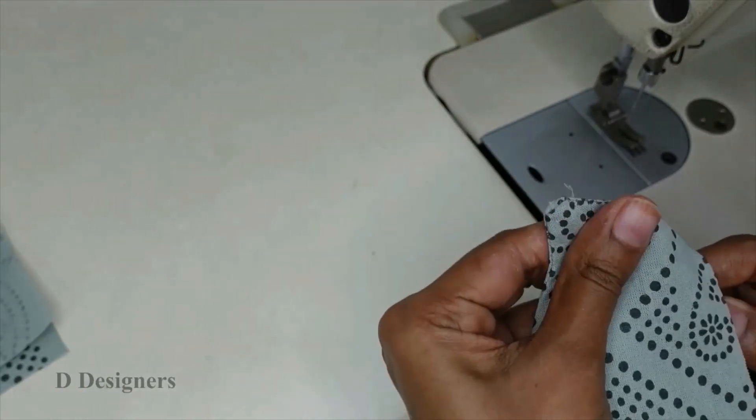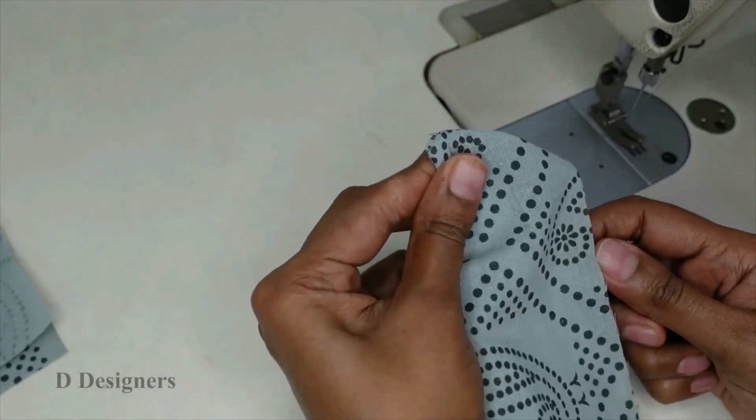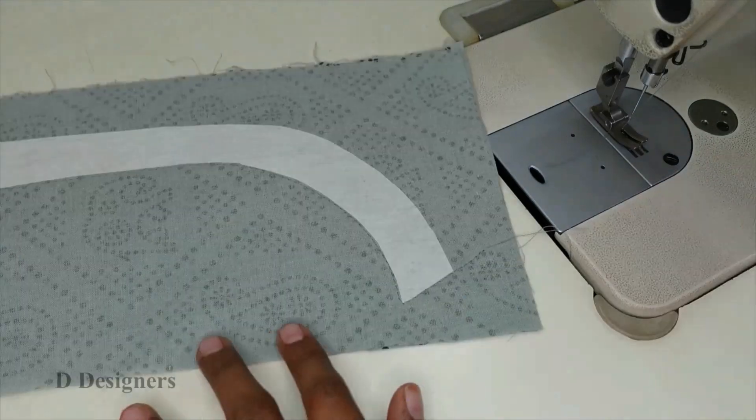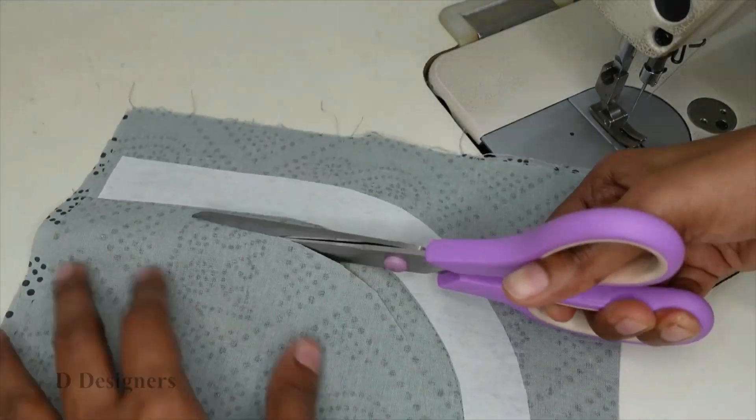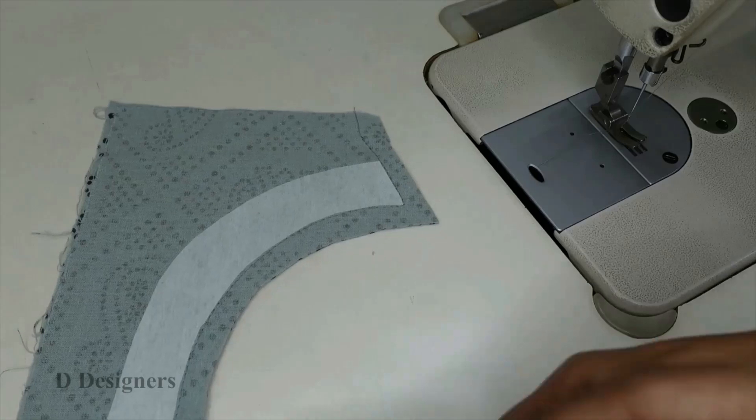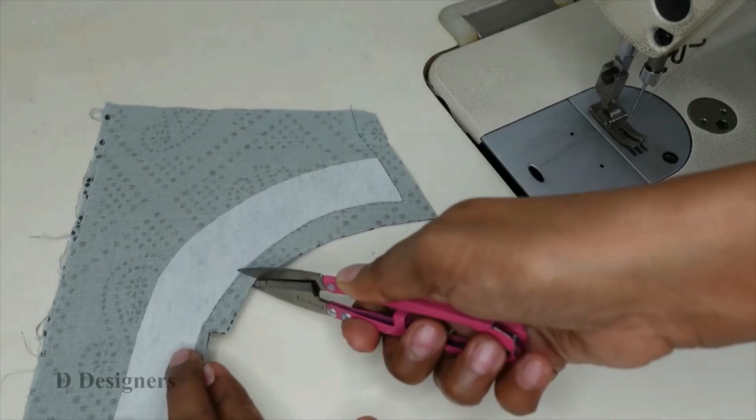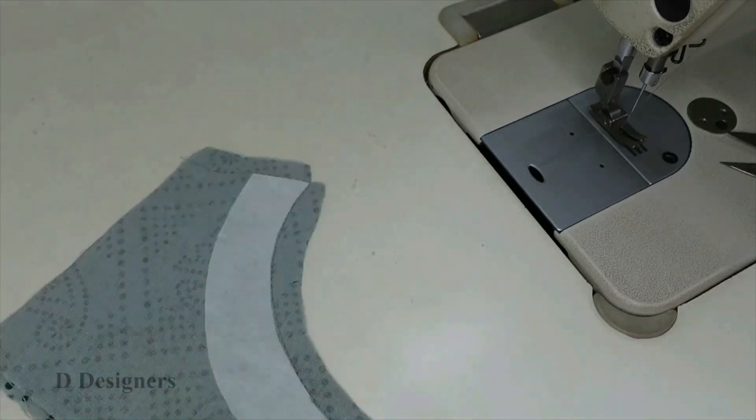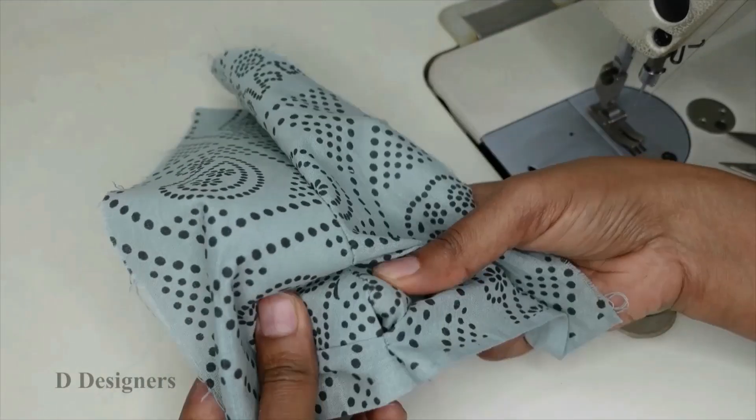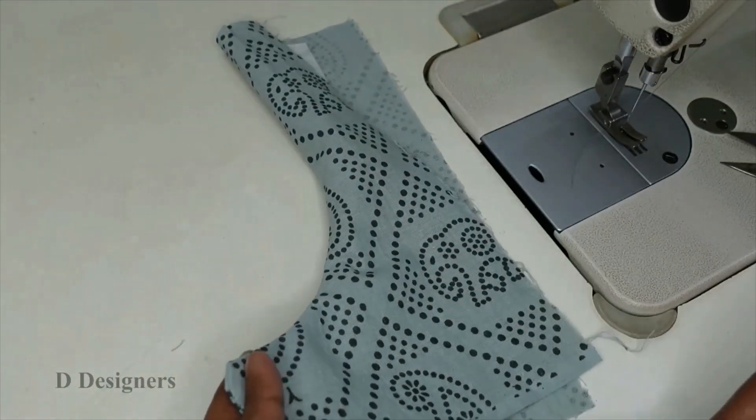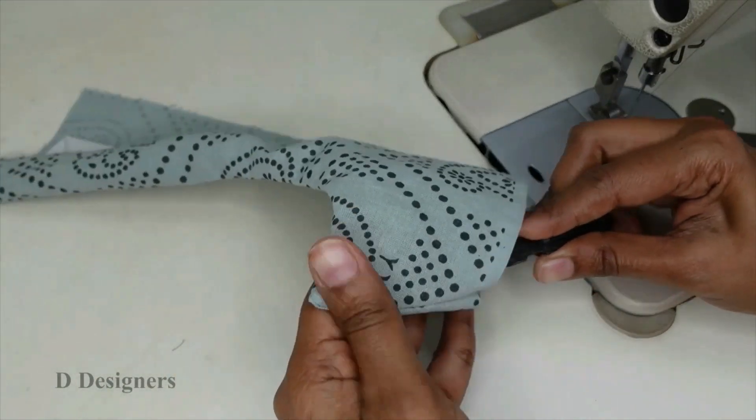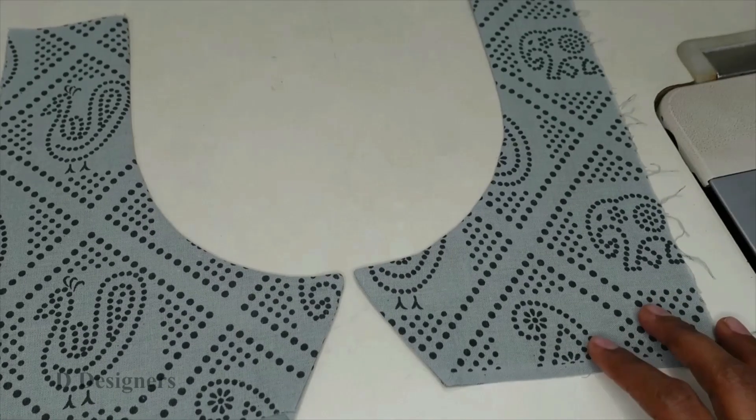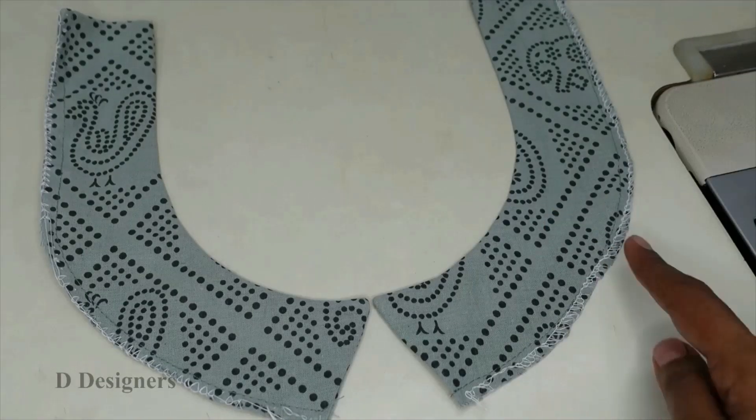So for the corners use some tools to make it sharp. Now the shape is ready. Do the same way for the other one. Now the first neckline is ready. I have done the overlock also.